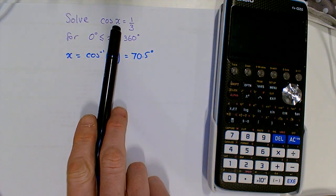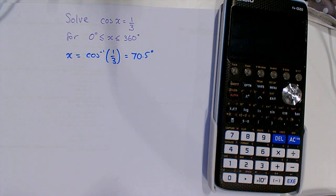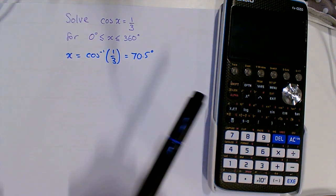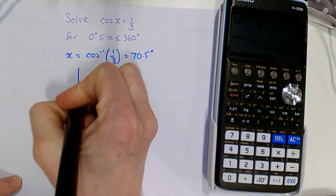First, we do inverse cos as you'd expect from GCSE, which gives you 70.5°. Make sure your calculator is working in degrees. Now I'm going to draw our CAST diagram.